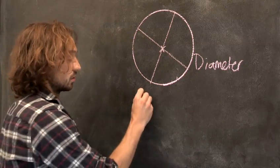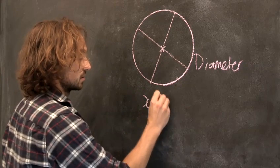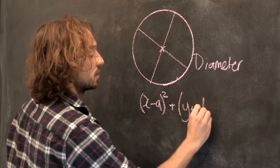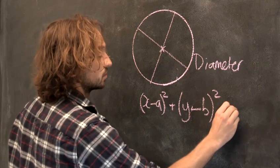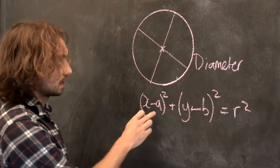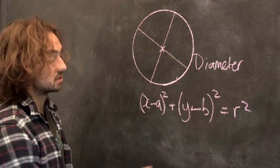The equation of a circle looks complicated, but it isn't. It looks like this: X minus A squared plus Y minus B squared equals R squared. Now, this is simple enough. It says that A, B and R, that's the only letters you need to know.